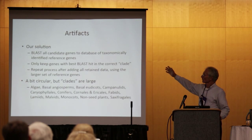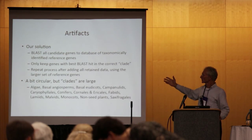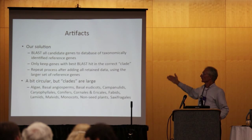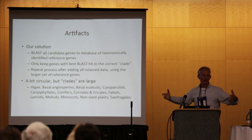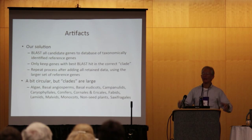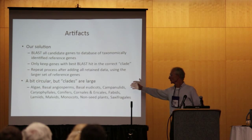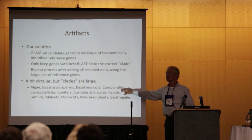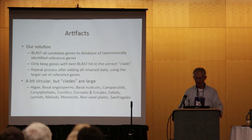What we did is blast all candidate genes to a database of taxonomically identified reference genes, then only keep the genes with the best hit in the correct clade. For example, if doing something like Acer, we would use a MALVID set of reference sequences for that BLAST and then repeat the process. It sounds a bit circular, but the clades used as references were really large — basal eudicots, campanulids, curiophyllales, et cetera.